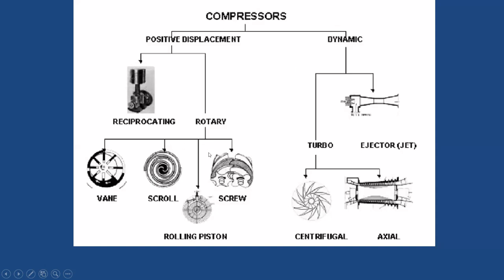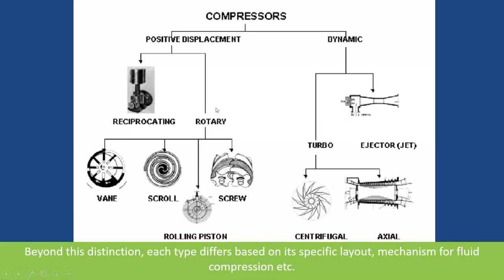In some air-conditioning applications, reciprocating and positive displacement compressors are used. Centrifugal compressors are hardly found in refrigeration applications. Beyond the positive/non-positive displacement distinction, each compressor type also differs based on its specific layout, outer construction, and mechanism of fluid compression. Accordingly, compressors are also classified as open-type compressors, semi-hermetic compressors, and hermetically sealed compressors.